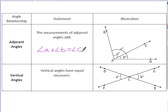Our second angle relationship is vertical angles. Vertical angles are created when two lines intersect, and we look at the angles that are directly across from each other. Angle A and angle B are equal in measure, so angle A is equal to angle B.